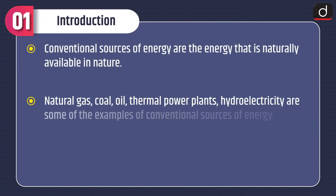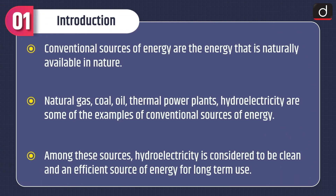Let's have a look at the introduction of the topic. Conventional sources of energy are the energy that is naturally available in nature. Natural gas, coal, oil, thermal power plants, and hydroelectricity are some examples of conventional sources of energy. Among these, hydroelectricity is considered to be a clean and efficient source of energy for long-term use.